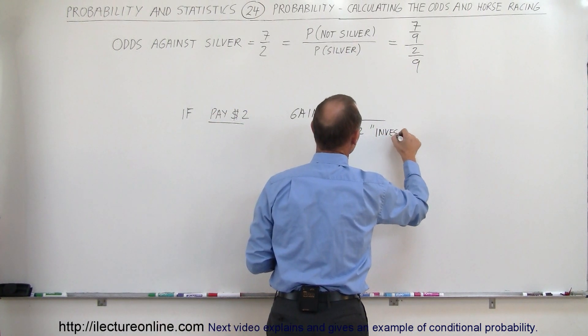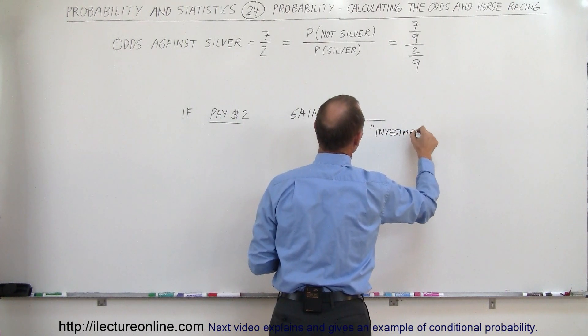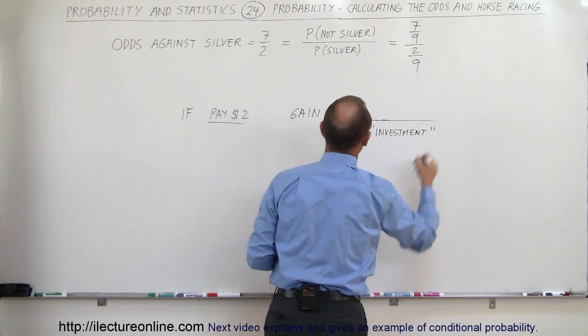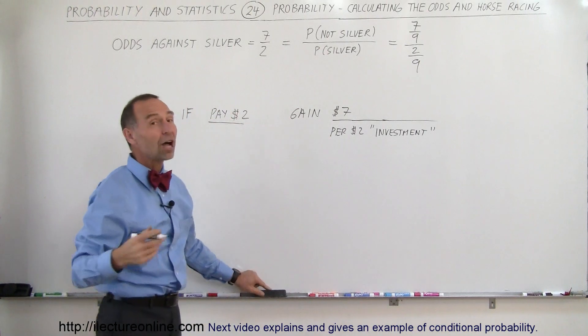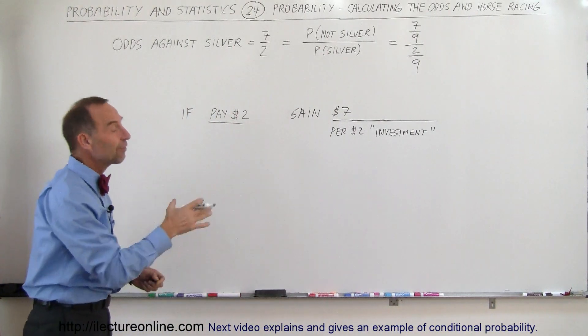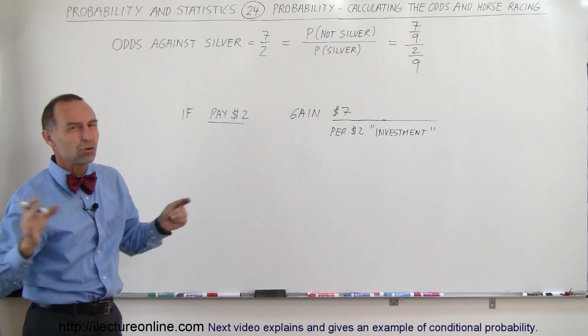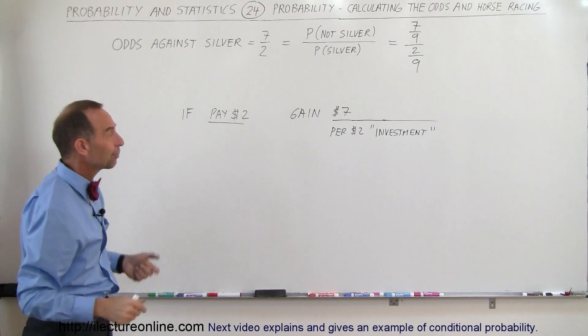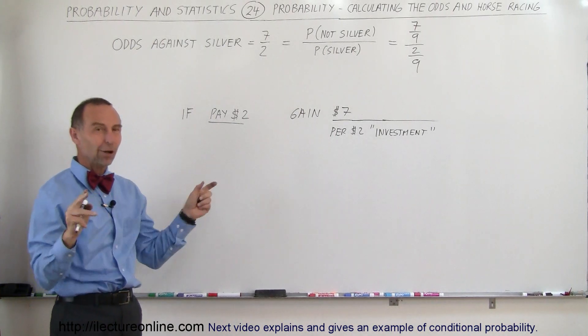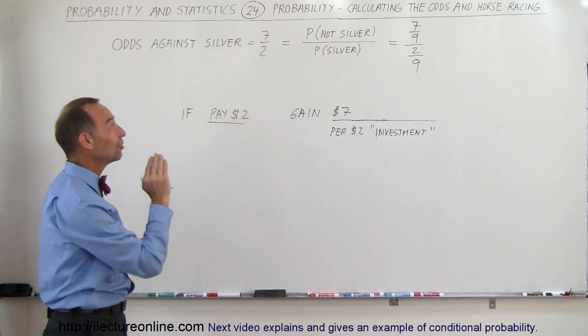But if you buy a ticket for $2 on Silver, and Silver happens to win, and if the odds are 7 to 2, that means they'll pay you $7 for a $2 ticket, then they give you the $2 back, so you would then normally get $9 back, but I hear that in today's world they no longer give you the $2 back, they just give you the odds.